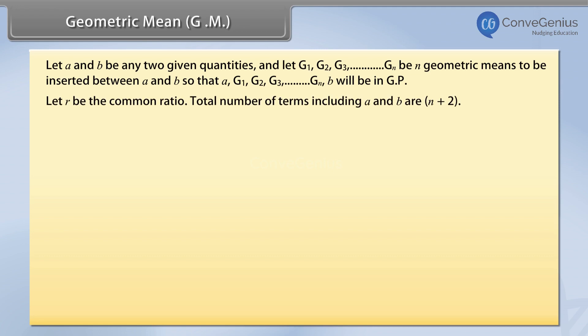Let r be the common ratio. Total number of terms including a and b are n plus 2.